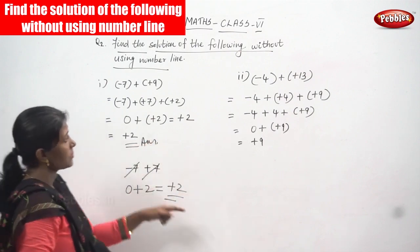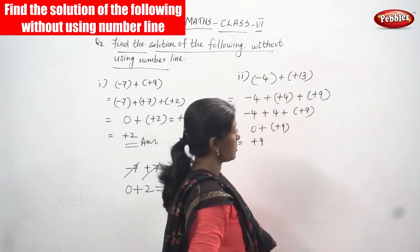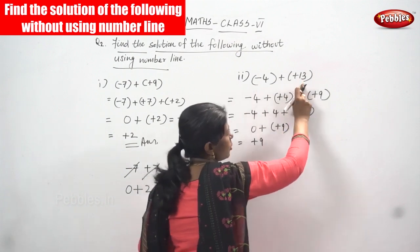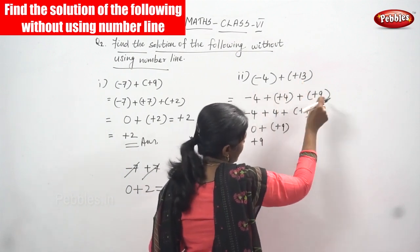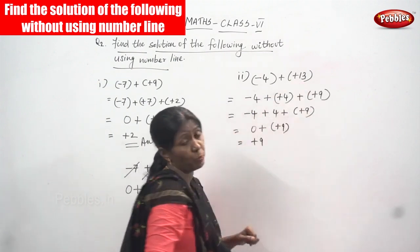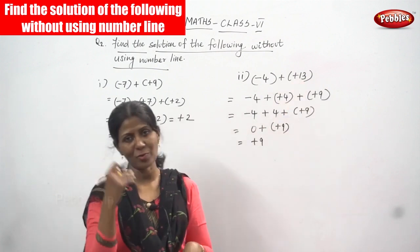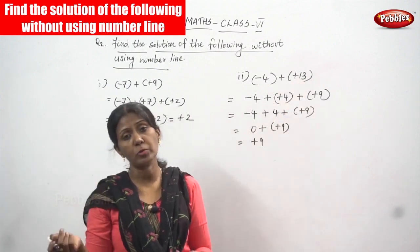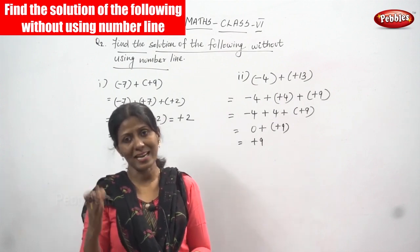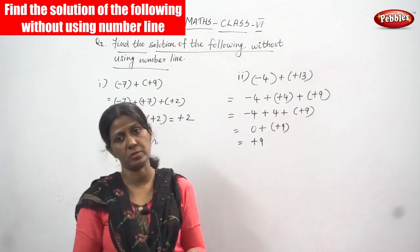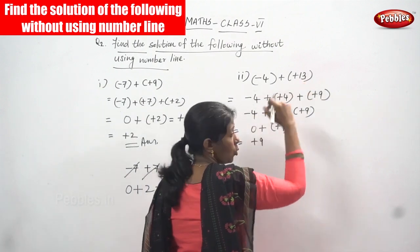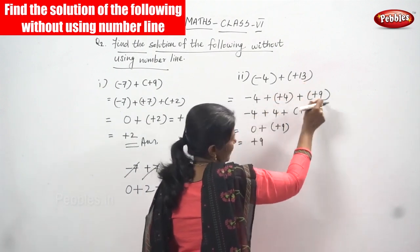The next sum: minus four plus plus thirteen. Minus four is a negative integer and plus thirteen is the positive integer. How we are going to write this: plus four then plus plus nine. You have to split the second number, the positive integer. The first number you write as it is, and you split the greater positive integer according to the negative integer.